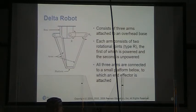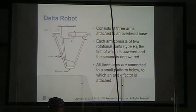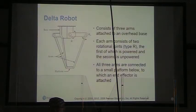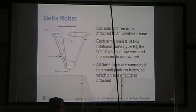A delta robot has three arms attached to an overhead base. Each arm has two rotational joints, type R — one powered and one unpowered. All three arms connect to a small platform where the end effector is attached.